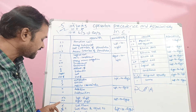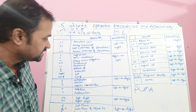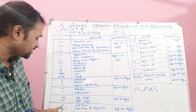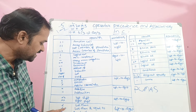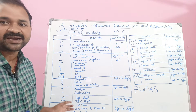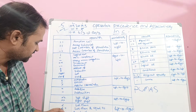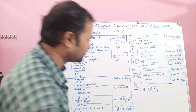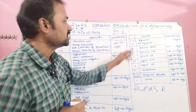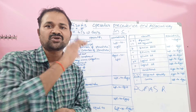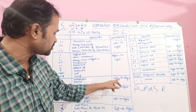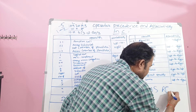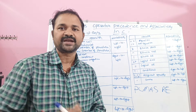Next we have bitwise left shift and right shift operators, denoted as S. After that come relational operators: greater than, greater than or equal to, less than, and less than or equal to. These four operators have equal priority, denoted as R for relational. Then we have double equals and not equal to, which are also called equality operators, denoted as E. The associativity for all these operators is from left to right.